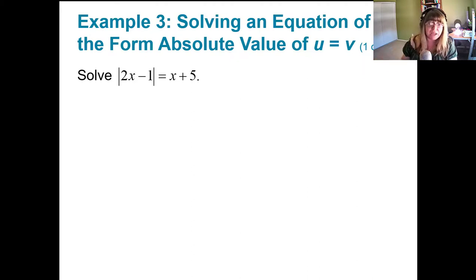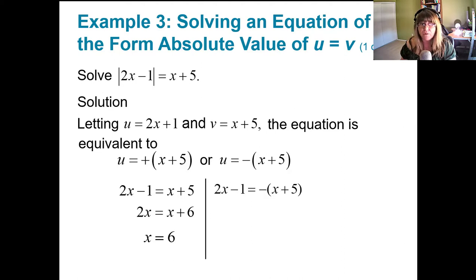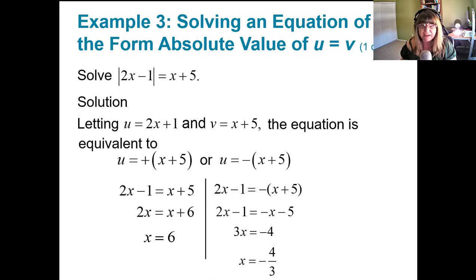Let's look at another example: the absolute value of 2x minus 1 equals x plus 5. Removing the absolute value markers, we set the right-hand side to the positive version and the negative version. For the positive version: 2x minus 1 equals x plus 5, giving 2x equals x plus 6, so x equals 6. For the negative version: 2x minus 1 equals negative x minus 5, and solving for x gives negative 4 thirds.